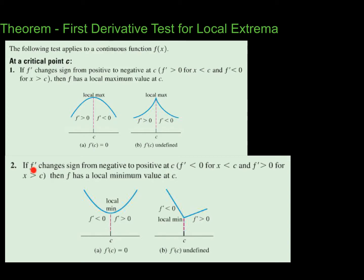Second possibility: if the derivative changes sign from negative to positive, then f has a local minimum value at that critical point. The derivative is negative to the left — meaning the function is decreasing — and positive to the right, meaning the function increases. This holds even when the derivative is undefined at c, as long as it's negative to the left and positive to the right.